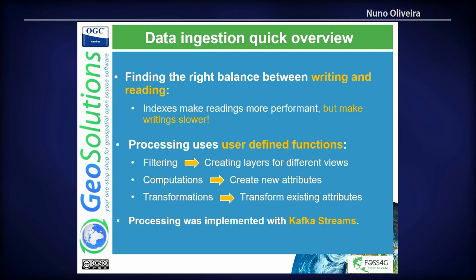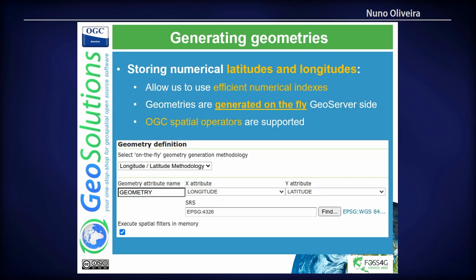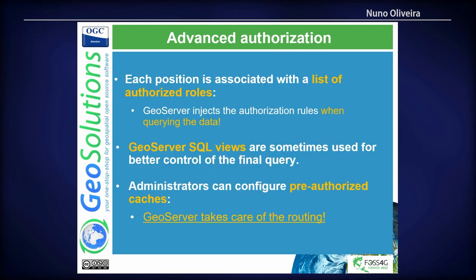The key was finding the balance between writing and reading — spatial indexes were not an option because they improve reads but hurt writes. We have a new GeoServer extension we'd like to contribute: it allows GeoServer to work without geometry columns in the database, using latitude and longitude columns to build geometry on the fly. All spatial operators work transparently, but behind the scenes requests use lat/lon numerical indexes, giving top performance for both writing and reading. Advanced authorization also required carefully crafting SQL views.